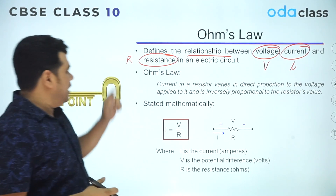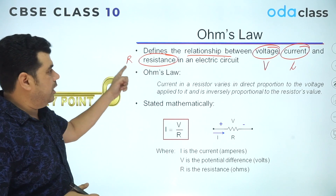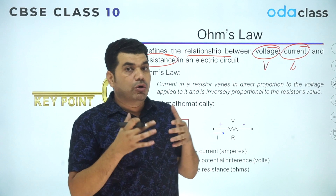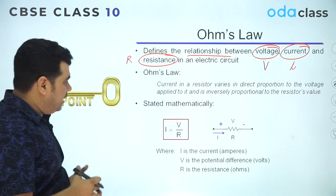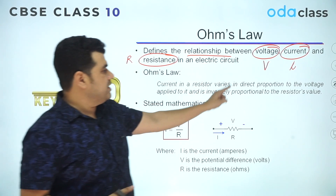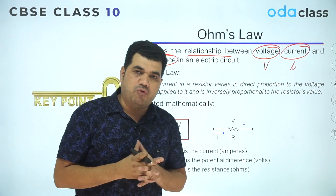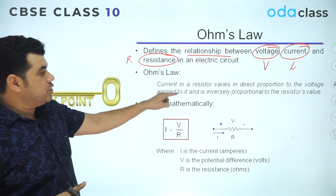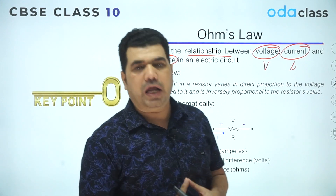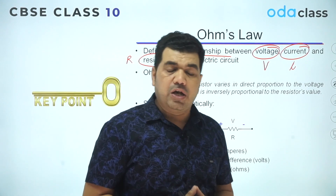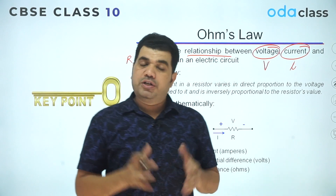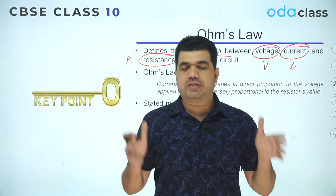and the electrical resistance R in any electric live circuit. Ohm's law states that current in a resistance varies in direct proportion to the voltage applied to it, and it is inversely proportional to the resistance value.